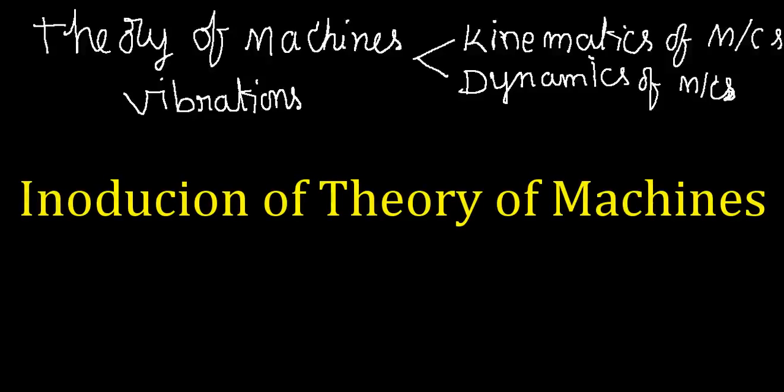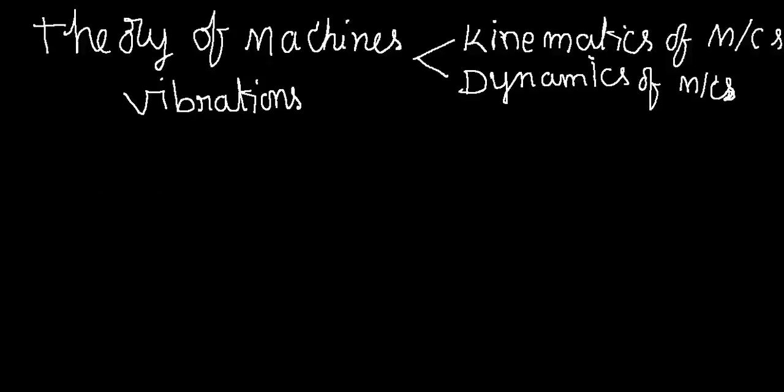This subject, Theory of Machines and Mechanisms, also includes vibrations. According to the GATE point of view, the weightage of the subject ranges from a minimum of four marks to a maximum of ten marks. Usually we expect at least four marks, on average six marks from this topic.